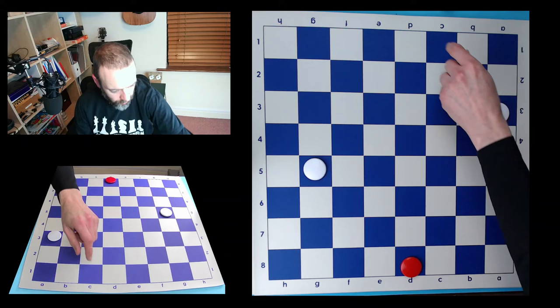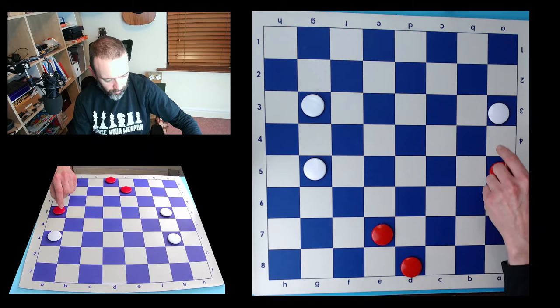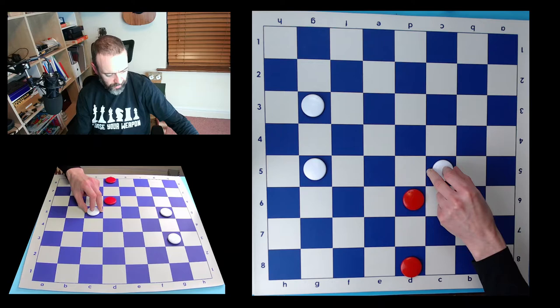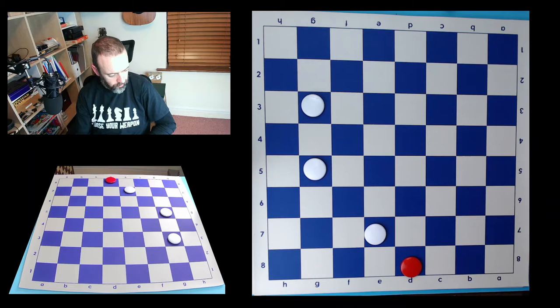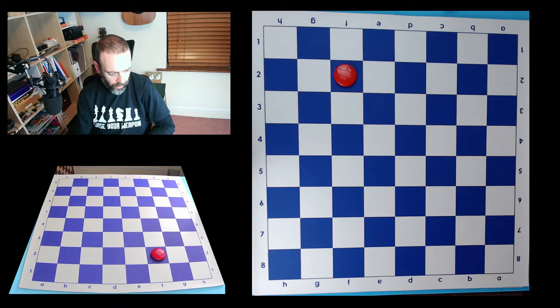We might even have a more complicated version, where we first draw this piece here. So we give away a piece. He has to capture. Then we give away another piece and he also has to capture. Now we're down two pieces. But our final move will capture three pieces. So that was a 3 for 2. We gave 2 and we won 3.